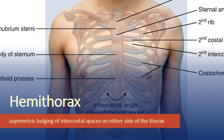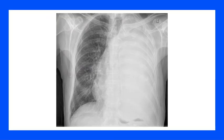Hemithorax is characterized by asymmetric bulging of intercostal spaces on either side of the thorax. If one side is bulging and the other is not, there is a problem on the bulging side, possibly caused by excess fluid deposits or inflammatory processes. An example is hemithorax secondary to pleural effusion, where abnormal deposits of fluid in the pleural cavity — often unilateral due to malignancy — fill one side.